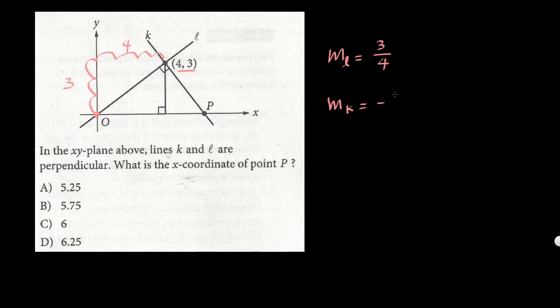So it should be -4/3—that's the slope for line K. We do know a point for line K as well because they share (4,3). We need to find the x-coordinate of point P. Point P is the x-intercept for line K, so P will have some x-value and a y-value of zero. To find it, we have to find the equation first.